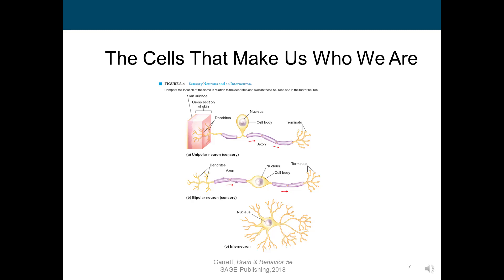Just as a point of reference, this neuron illustration is giant so we can see it, but neurons are so small that they can only be seen with the aid of a microscope. The cell body, which is the largest part of the neuron, ranges from 0.005 to 0.1 millimeters — about the thickness of a dime.